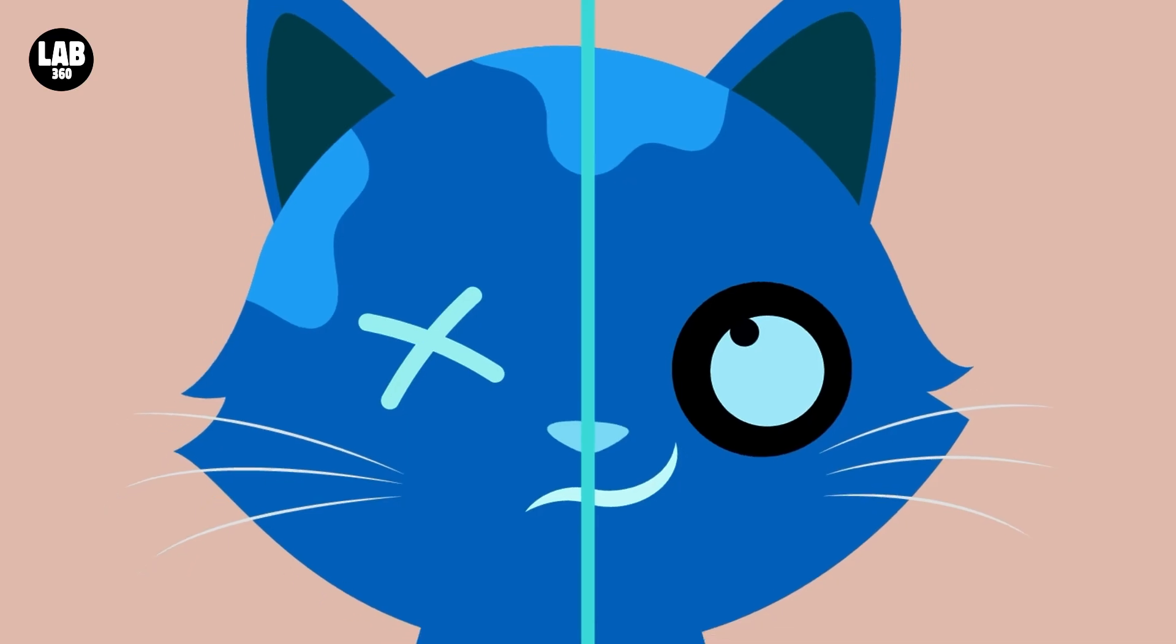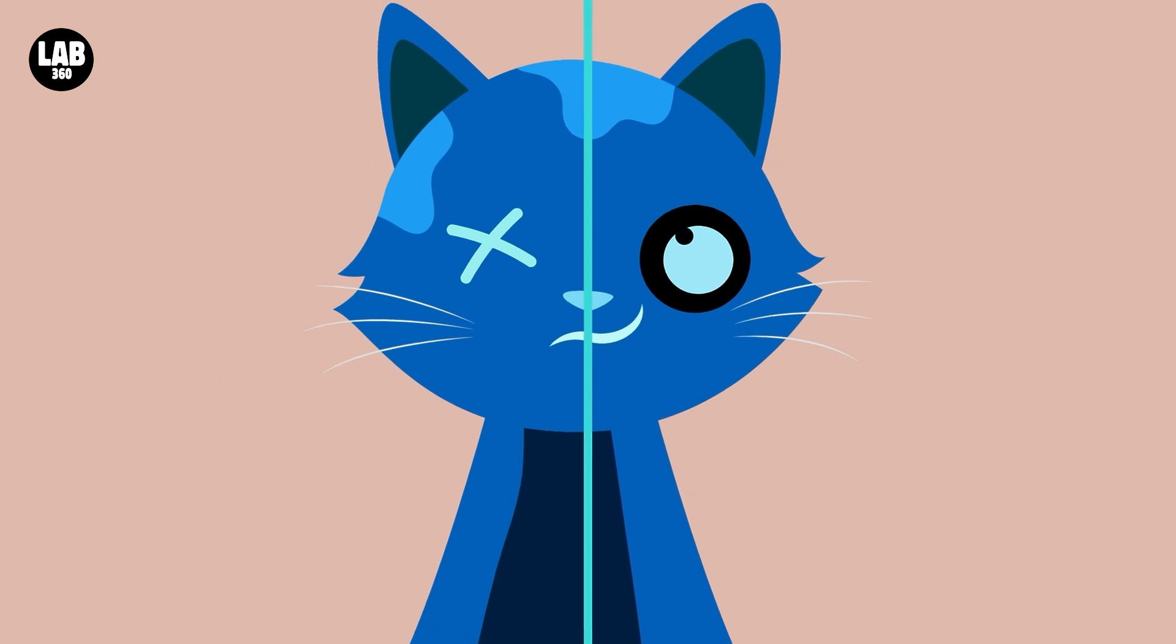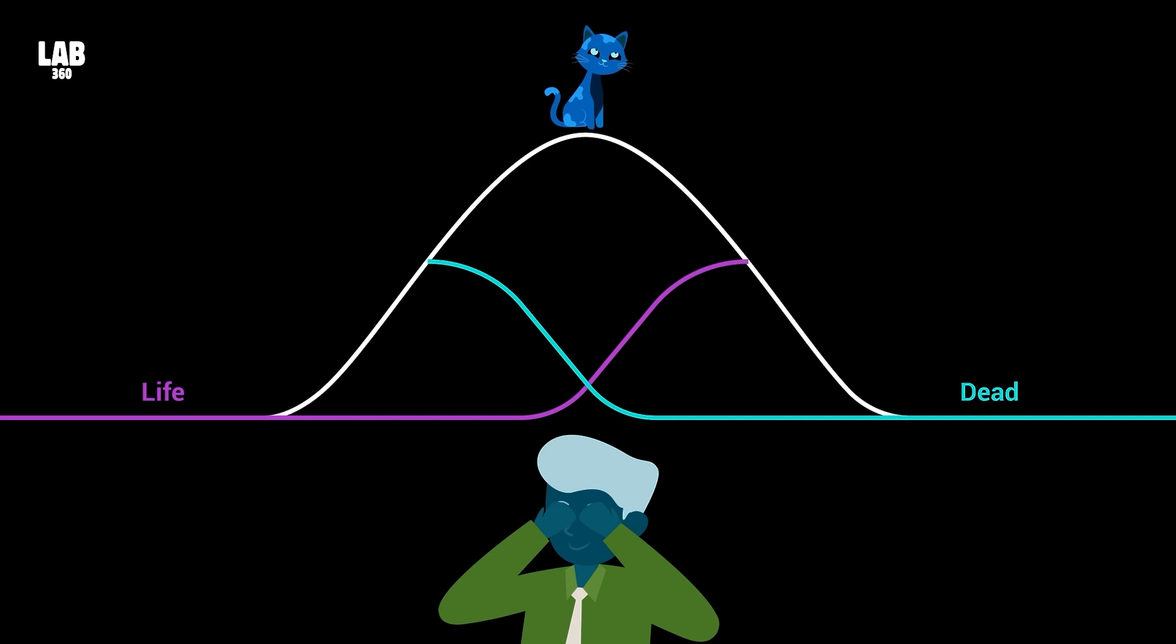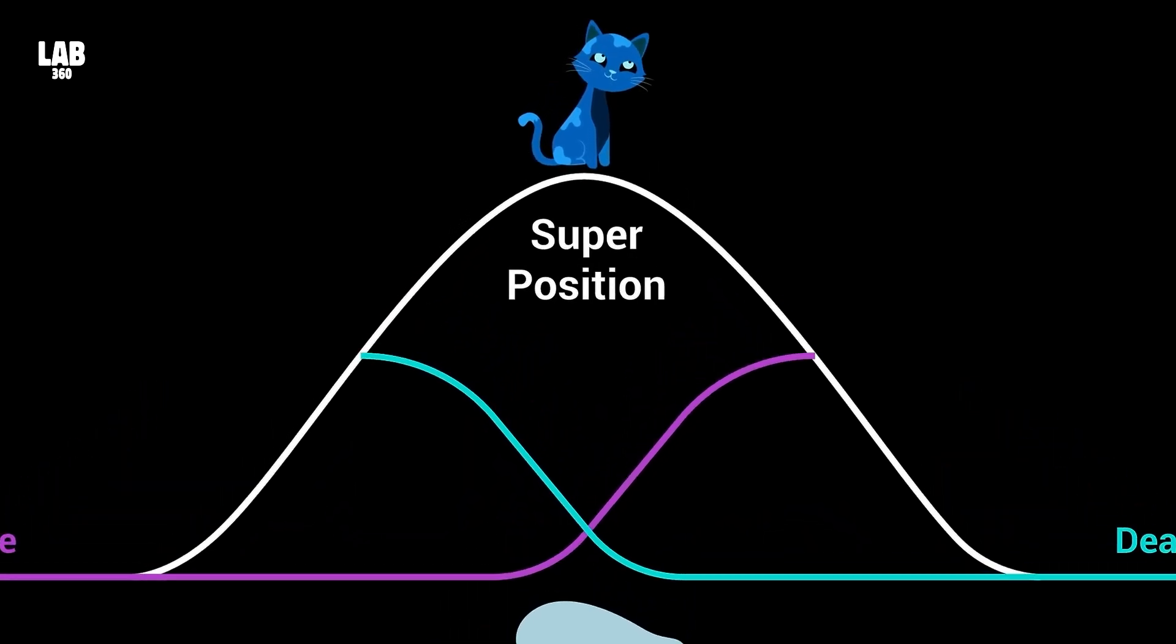So until we open the steel chamber, the probability of the cat being dead or alive is 50-50. In other words, as long as we don't look, the cat is in a state of superposition.